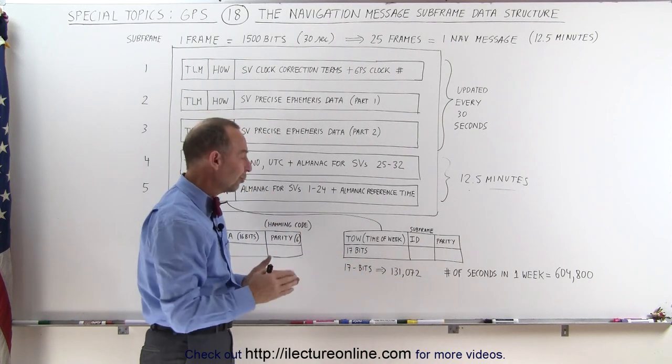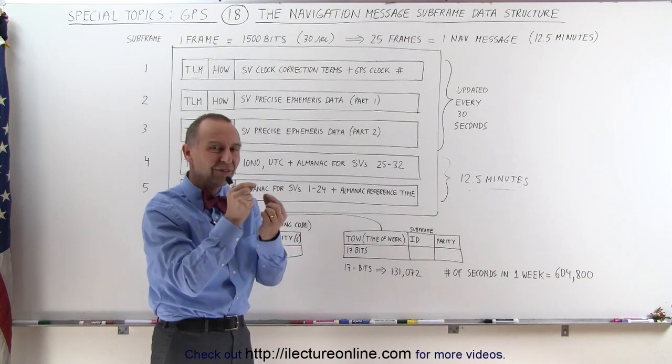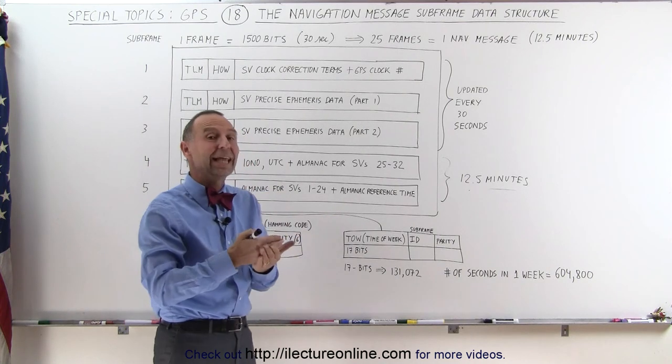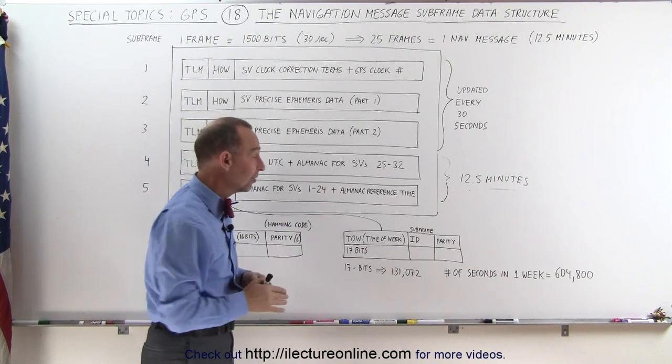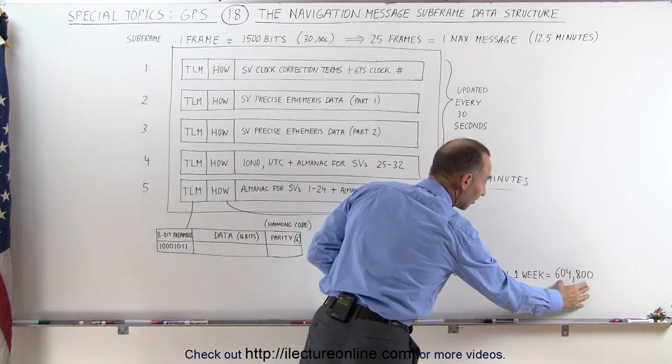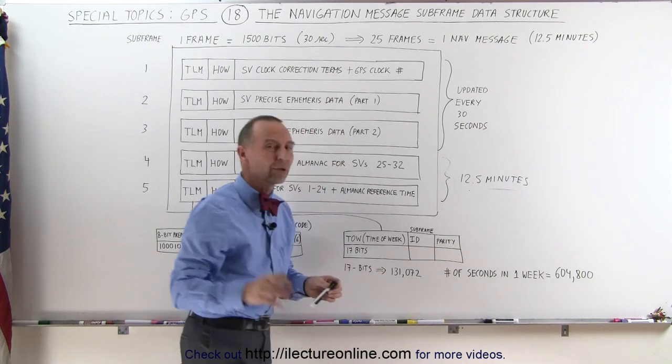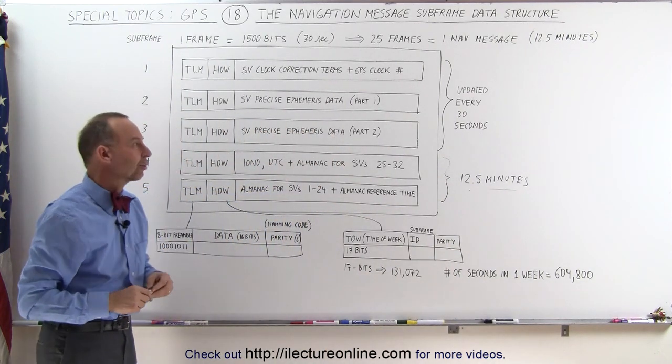Well, first what they do is they divide things up in one and a half second segments, and then they take four segments at a time, which is for a total of six seconds, and if you divide this number by six, it does fit into the 17-bit structure. We'll give you some more information about that later as well.